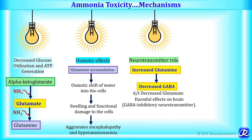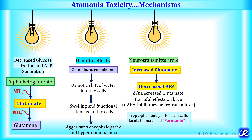The third mechanism involves a neurotransmitter role. Increased ammonia concentration enhances formation of glutamine from glutamate, depleting the brain pool of glutamate, which in turn decreases formation of gamma-aminobutyric acid (GABA), an inhibitory neurotransmitter. Additionally, increased glutamine in the brain is transported out by the same antiporter that allows tryptophan to enter brain cells, resulting in enhanced tryptophan levels in the brain and increased synthesis of serotonin. Both decreased GABA and increased serotonin are responsible for the toxic effects of ammonia.